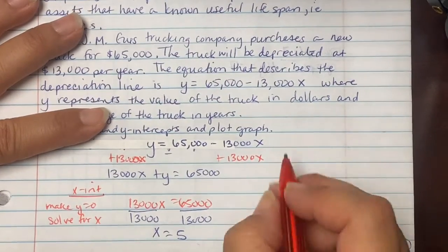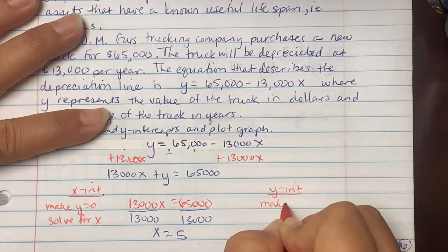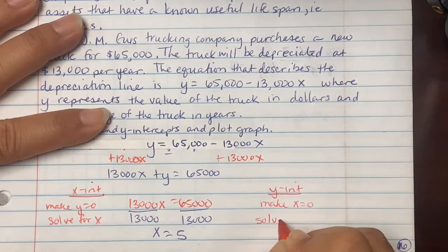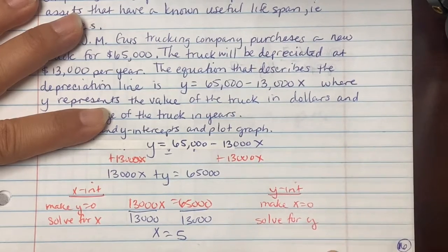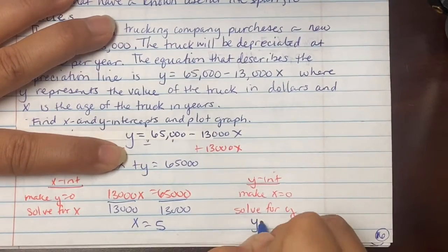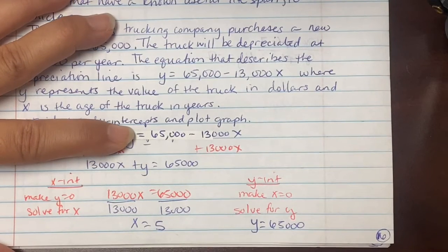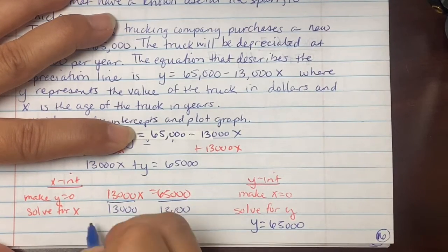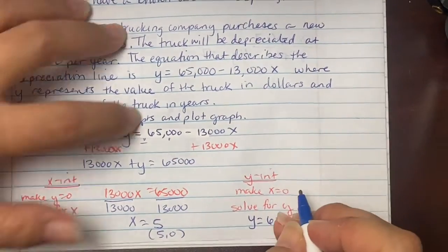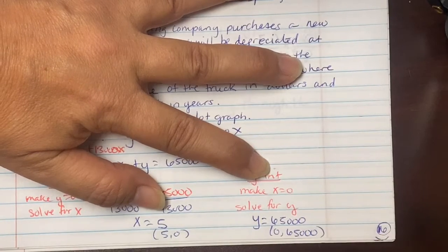To find the y intercepts, you're going to make x equal to 0. Solve for y. So in this instance, if we cover 13,000, we get y = 65,000. Remember, these are ordered pairs. So we have it as (5, 0) and then (0, 65,000).